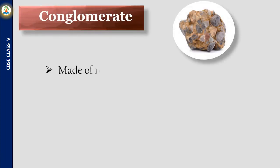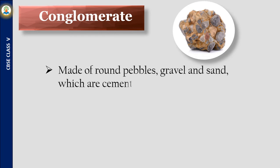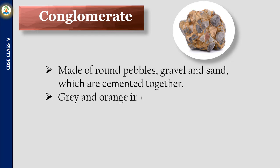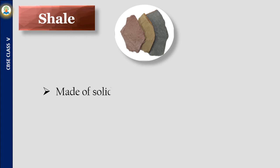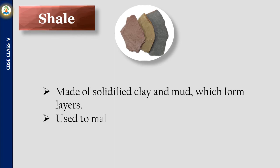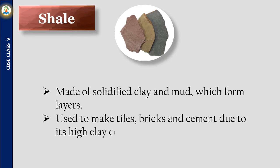Conglomerate is made of round pebbles, gravel, and sand which are cemented together. It is gray and orange in color, used in construction and for polishing ornaments. Shale is made of solidified clay and mud which form layers. It is used to make tiles, bricks, and cement due to its high clay content.